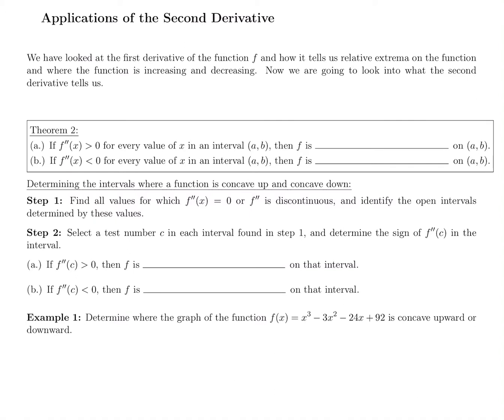We're actually going to do our same two steps: take the derivative and set it equal to zero, then make a sign chart. But now instead of setting the first derivative equal to zero, we're going to set the second derivative equal to zero. And instead of plugging into the first derivative on our sign chart, we're going to plug into the second derivative on our sign chart.